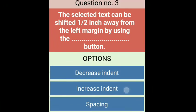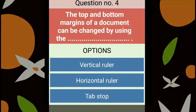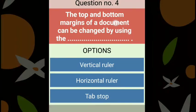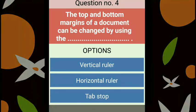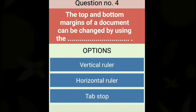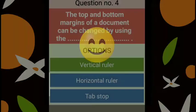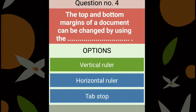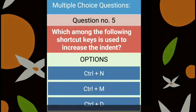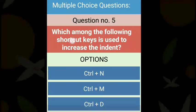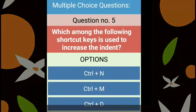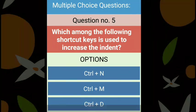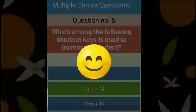Question four: the top and bottom margins of a document can be changed by using the dash. To change the top and bottom margin, we use the vertical ruler displayed on the side of the page, which is like a scale. Question five: which shortcut key is used to increase the indent? We can use Ctrl+N. That is the right answer.